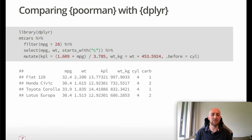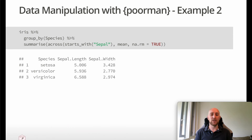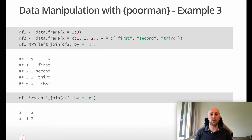Comparing this to dplyr — again, you can see it's the exact same script, just with the library call changed, and it still works. Pawman also offers group_by and summarize functionality. Here I've got the iris dataset, I'm grouping by the species column, and then summarizing across the sepal columns calculating the means, giving this nice aggregated output. Pawman also offers all of the join functionality — here I've got two data frames, performing a mutating join with a left join, and also a filter join taking all rows from data frame one that don't have a match in data frame two.